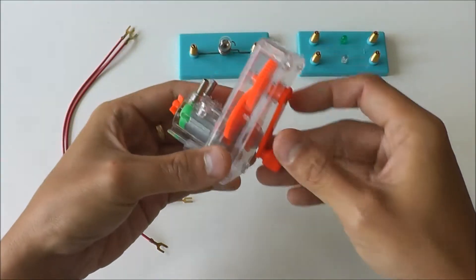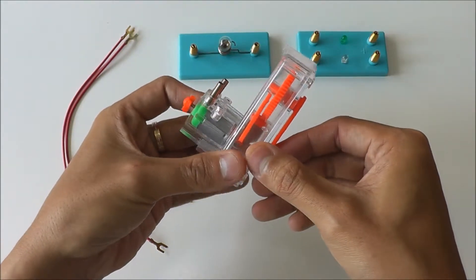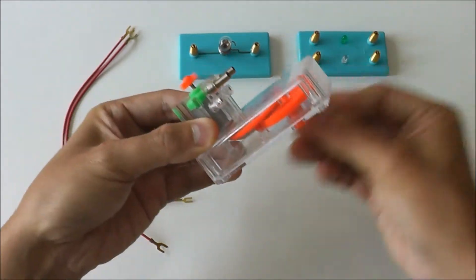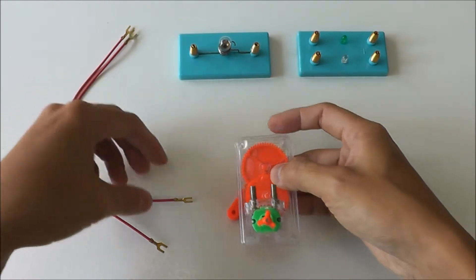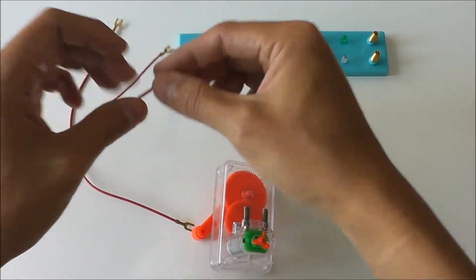Now can you see that our generator is fixed? If you turn it, the motor will turn. So now what we need to do is to connect the generator to a light bulb in series.